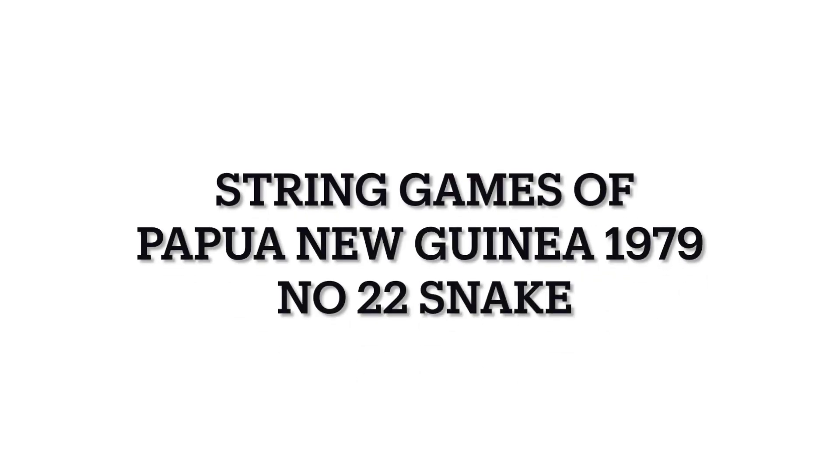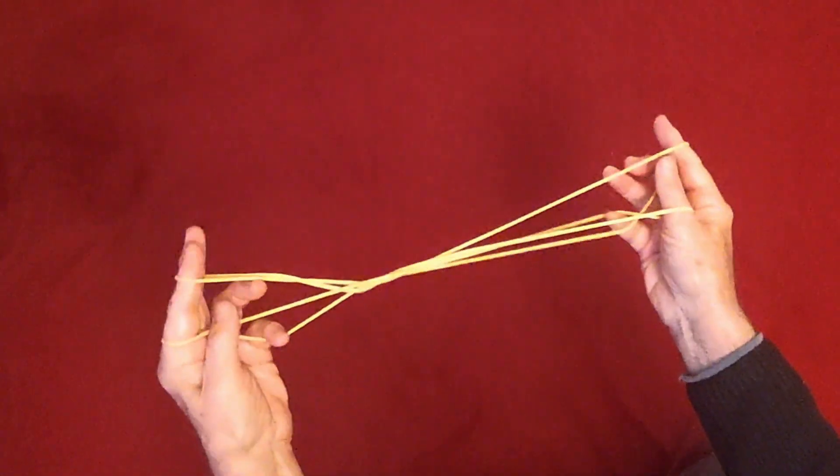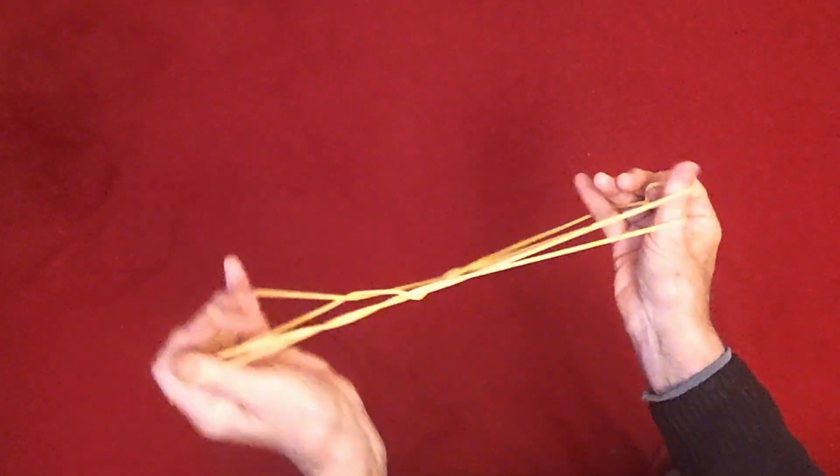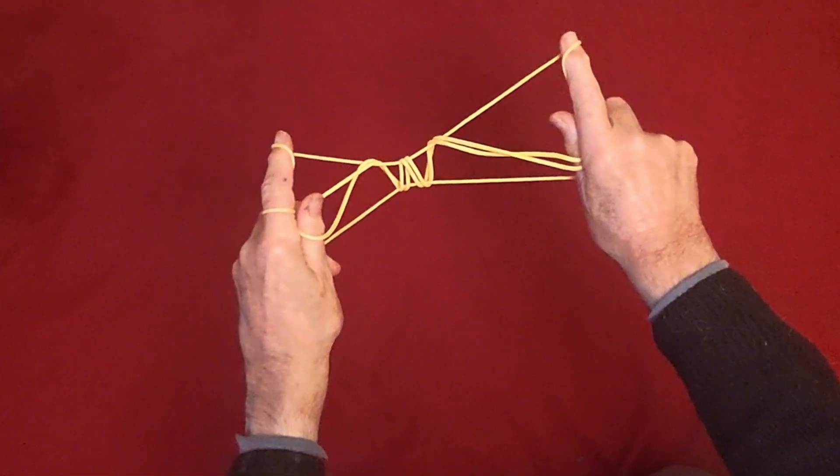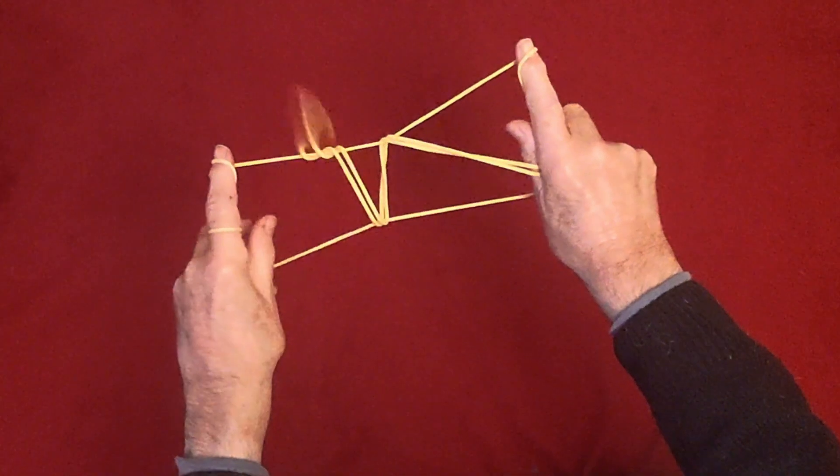This design is known as snake and I'm going to make it quite quickly because you see how it goes and I'll explain it afterwards. So this is a snake, only a few moves and you make the snake appear and then you let go of the left thumb and the snake will disappear into the long grass.